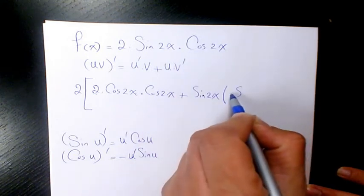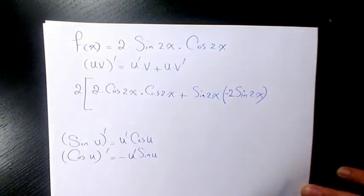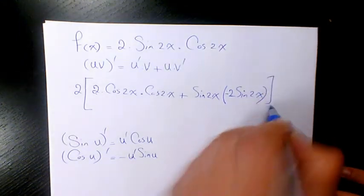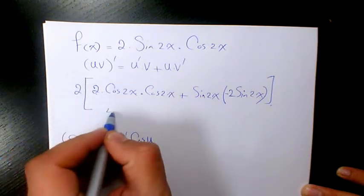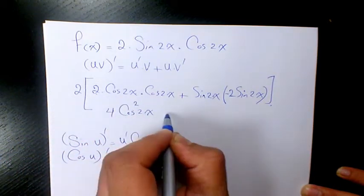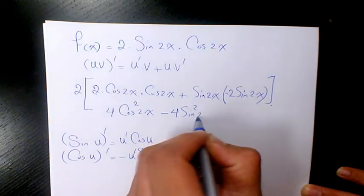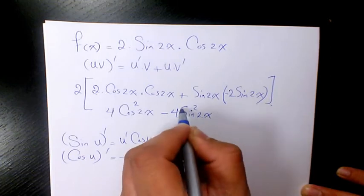When you simplify it is going to be 4 cosine squared 2x minus 4 sine squared 2x.